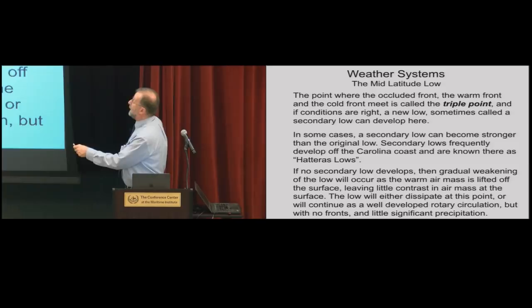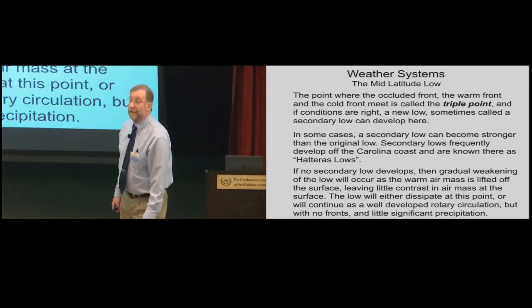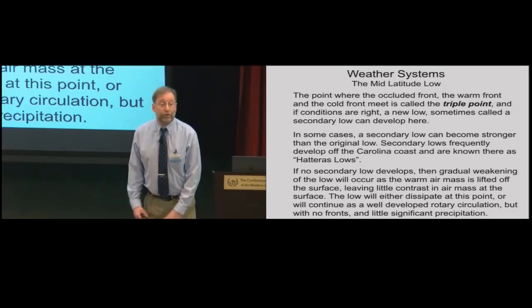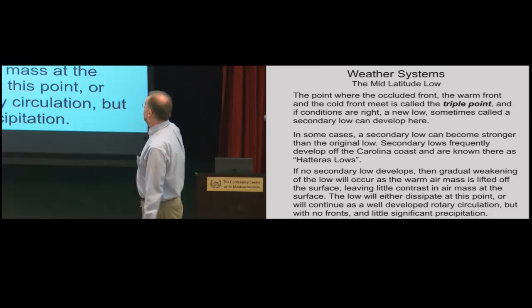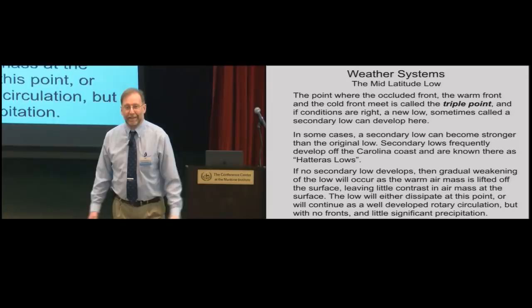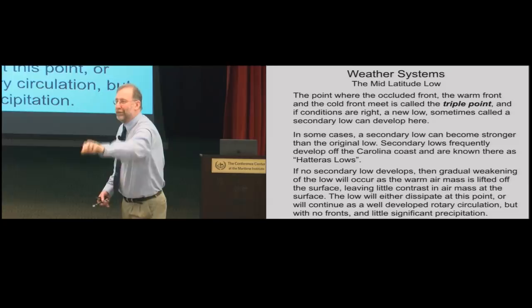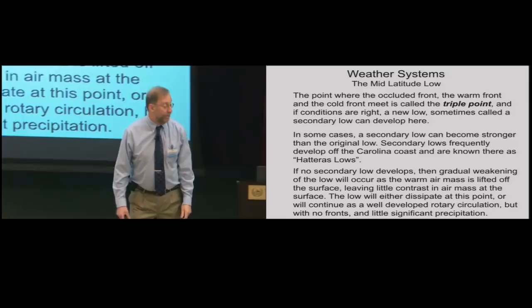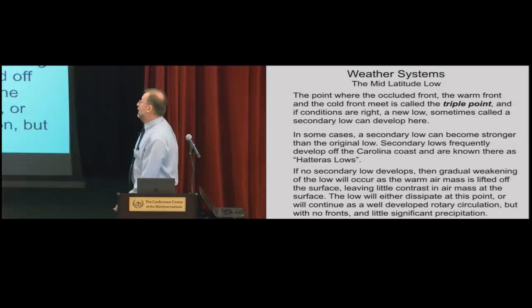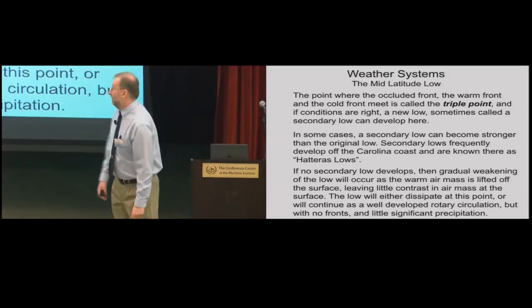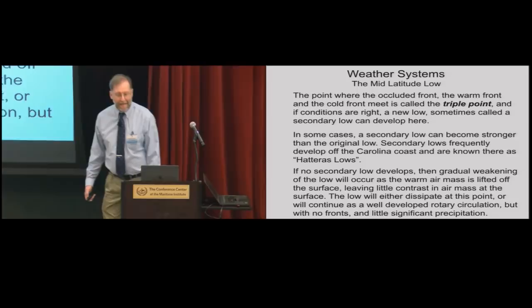Sometimes at the triple point a secondary low develops — and that secondary low can become even stronger than the original. Secondary lows frequently form off the Carolina coast — called Hatteras lows — fueled by warm, moist air injection from the Gulf Stream, which adds instability and moisture, enhancing latent heat release from rising motion. If no secondary low develops, gradual weakening typically follows as the warm air mass is lifted off the surface, leaving little air-mass contrast. The low can dissipate or persist as a non-dynamic low that still produces wind without much precipitation.